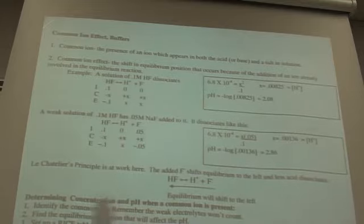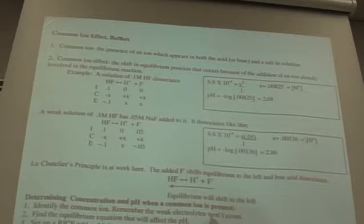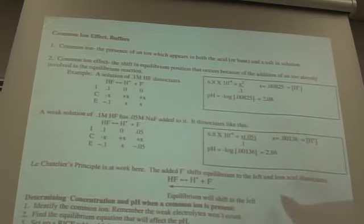So, here are your steps. Identify the common ion. Remember, weak electrolytes don't count because you need something that totally dissociates in water. Get that? Yeah, if it doesn't dissociate, it's not going to be a common ion.